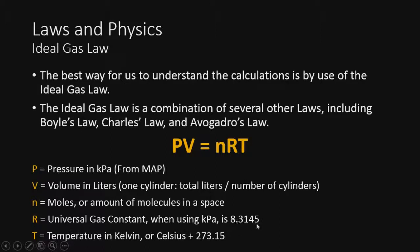So 8.3145 in this case is what we're always going to use. And then of course, temperature is going to be in Kelvin. So Celsius plus 273.15 or just 273, and you'll get Kelvin. Very simple. And don't get intimidated when you hear molecular. It's just a number.